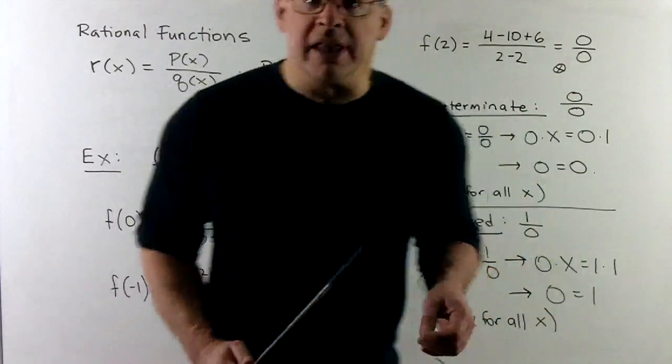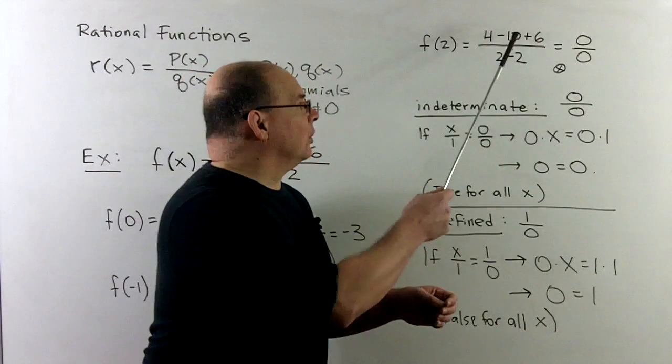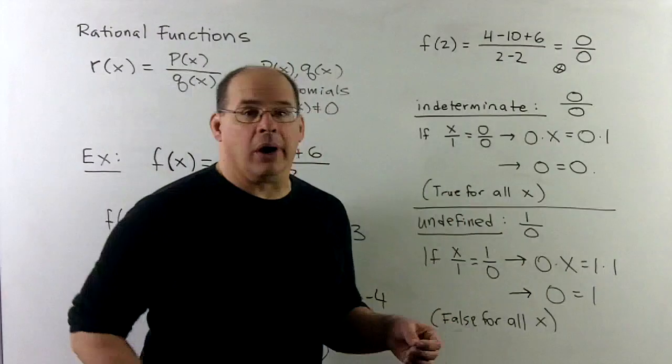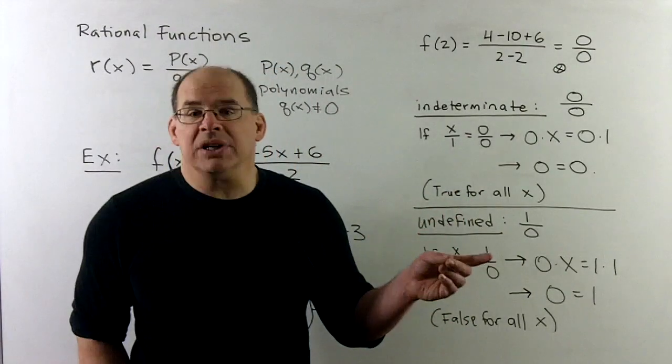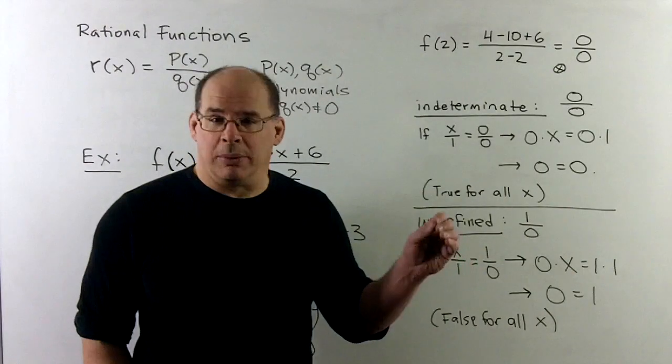Now, what makes things interesting, let's try f(2). So if I put in f(2), we're going to wind up getting a 0 over 0. 0 over 0, I can't work with. Whenever we divide by 0, there's going to be problems.